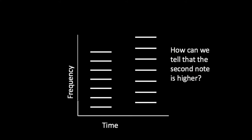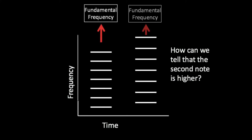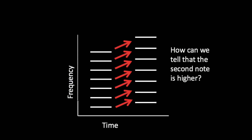Imagine you hear two notes and want to know which is higher in pitch. You could solve this by estimating the fundamental frequency — one will have a higher fundamental frequency than the other. However, you could also track that all of the harmonics shifted together and use that to determine that the second note was higher. It is thus not obvious that pitch perception would always involve estimating the fundamental frequency of a sound.